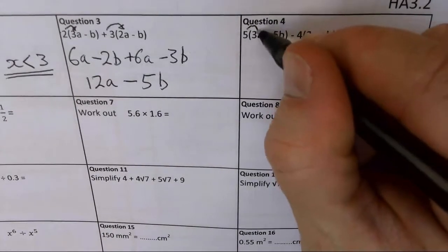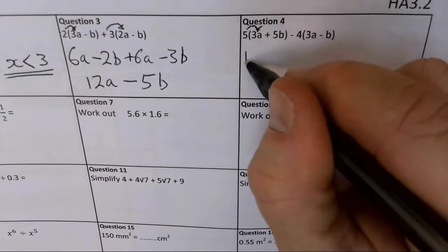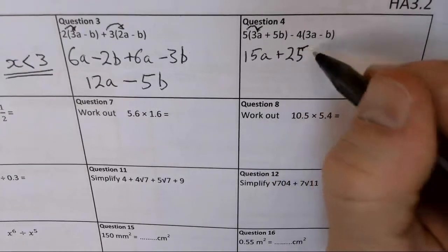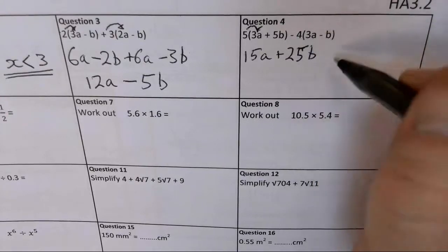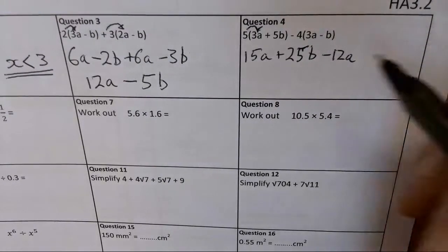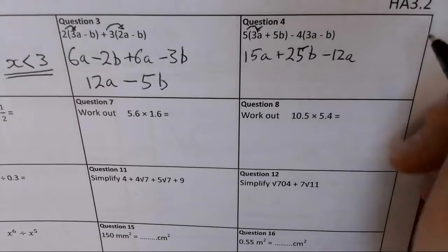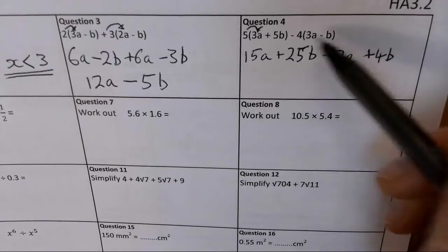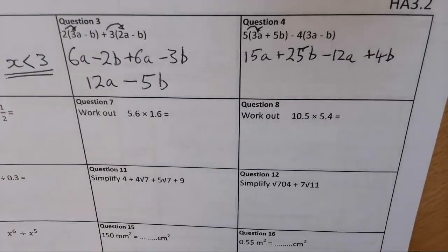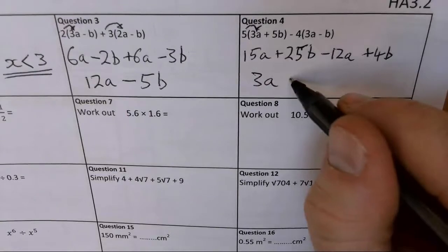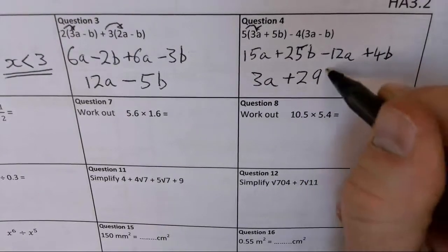Question 4, same deal. 5 times 3a gives 15a, 5 times 5b gives 25b, minus 4 times 3a gives minus 12a, and minus 4 times negative b gives plus 4b — watch out for that one, two negatives multiplied give a positive. So 15a minus 12a gives 3a, and 25b plus 4b gives 29b.